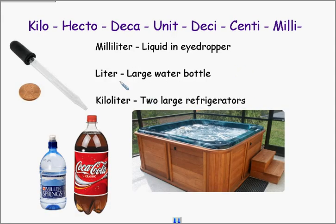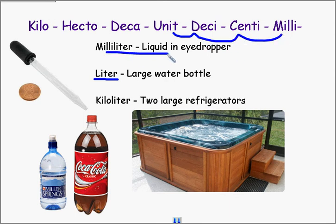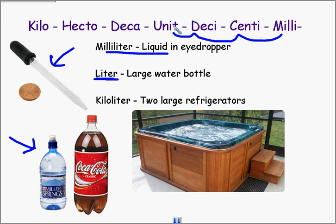For liquid or capacity, the base unit is the liter. A thousandth of a liter — moving the decimal point three places to the right — would be a milliliter, which is about a drop in an eyedropper. A liter is a large water bottle. The water bottle I carry around is a medium-sized water bottle, and that's 710 milliliters, so it's a little over half a liter. A thousand milliliters would be a full liter, and mine is 710 milliliters.